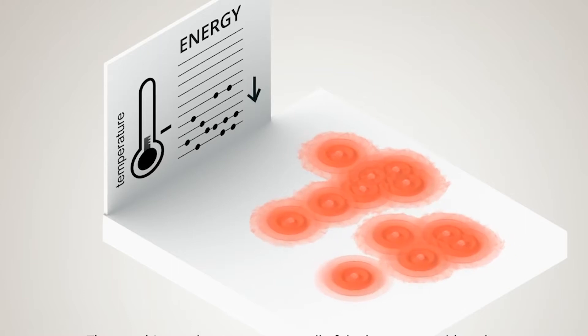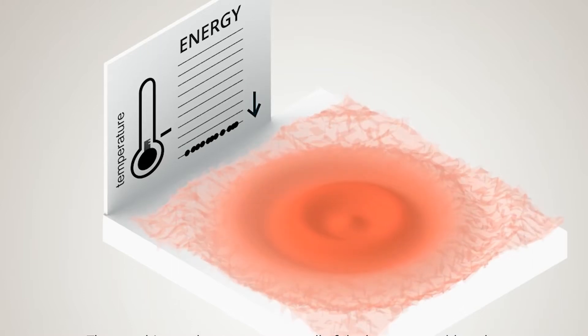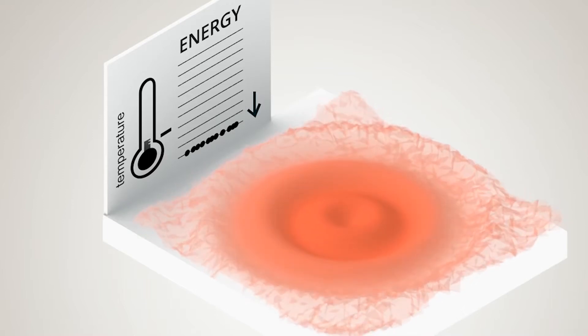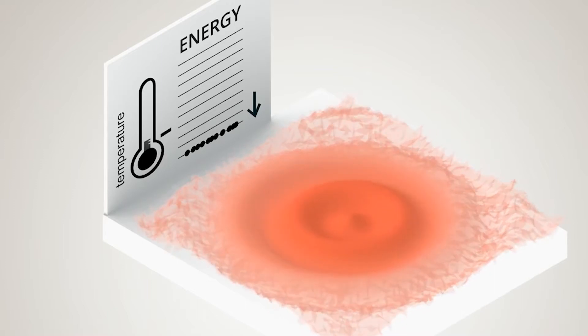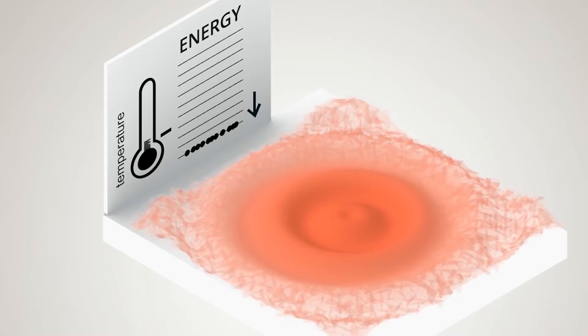Putting this into simpler terms, we could describe this behaviour as matter having an identity crisis. The particles in our little blob of matter seem to lose their sense of identity, merging into a single collective and behaving as just one single body. This is a Bose-Einstein condensate.